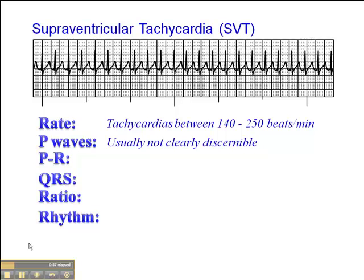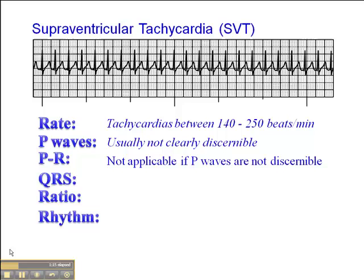Oftentimes P-waves are buried in the preceding T-wave, and sometimes you'll see a little notch coming off the descending portion of the T-wave, and you'll see that consistently. You might call that a P-wave, but don't mistake it for a sinus P-wave — that's usually an ectopic focus causing this SVT. The PR interval is not applicable if P-waves are clearly not discernible.